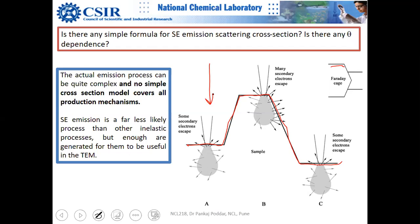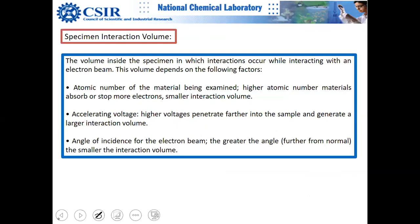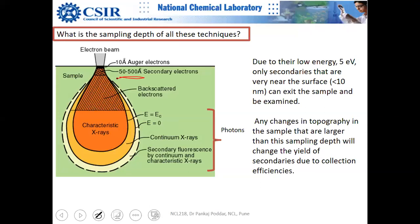Suppose the sample is platinum or palladium — the same element throughout, so the interaction volume is the same. The 50 to 500 angstrom variation in sampling depth is primarily because of the atomic number Z. You also see this in TEM: for polymers you can afford to take samples as thick as 200 nanometers, while for gold you cannot take more than 20 nanometers — a tenfold difference.